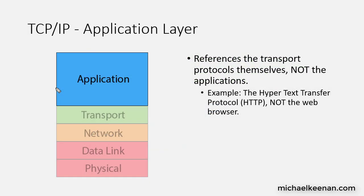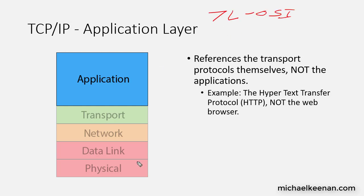Hey, this is Mike Keenan. Today I'm going to go over the TCP/IP application layer. The TCP/IP application layer is the seventh layer in the OSI model, but it is the fifth layer in the TCP/IP model.